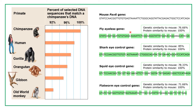Comparing the Pax6 eye control gene across species, genetic similarity to mouse is 76.6% in flies, 85% in sharks, 78% in squids, and about 72% in flatworms, with protein similarity reaching 100% in some cases. These similarities in DNA tell us that fly, shark, squid, flatworm, and mouse are not that different. They may look very different externally, but at the gene structure level they are remarkably similar.